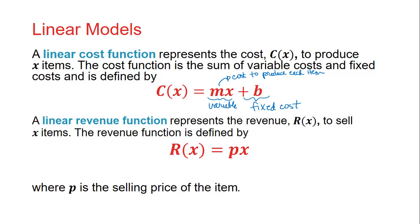A linear revenue function represents the revenue R(x) to sell x items. The revenue function is defined by R(x) = px. So p, if we're thinking about selling items, is basically the price that we sell each item.